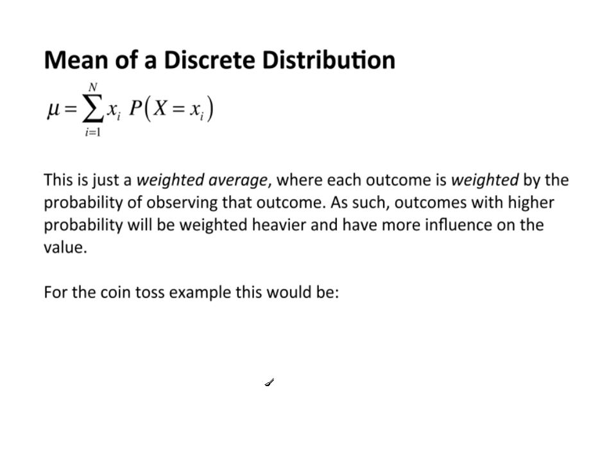So now that we understand what the discrete probability distribution is, let's start doing some calculations, some basic calculations. The first thing we want to take a look at is the mean of a discrete probability distribution. Then, of course, we'll look at the variance and standard deviation.